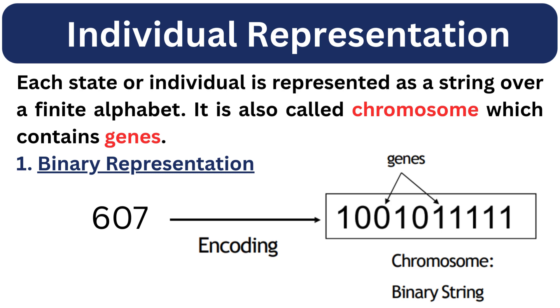First, individual representation. Each state or individual is represented as a string over a finite alphabet. It is also called a chromosome which contains genes. In many problems we use binary representation. For instance, take the number 607. It becomes this binary string. Each bit would represent a gene in our chromosome.